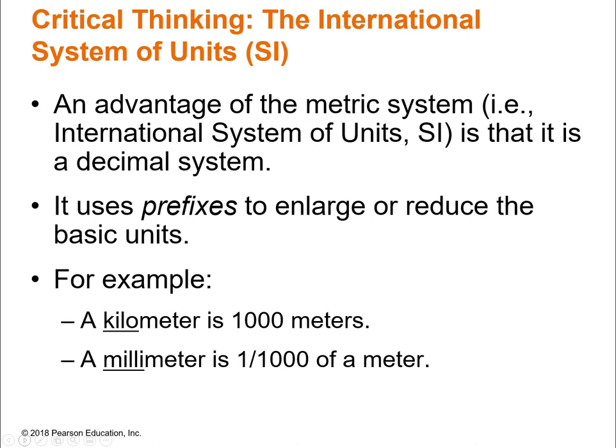One advantage of the metric system is that it's a decimal system. When converting in the imperial system — say cups to tablespoons — there's no clear relationship; you just have to memorize each one. Whereas with the metric system, the prefixes always enlarge or reduce the base units by the same amount. Kilo always means a thousand. Milli always means a thousandth. That makes life a lot easier.